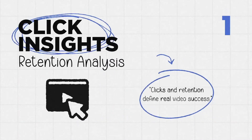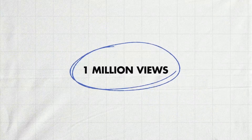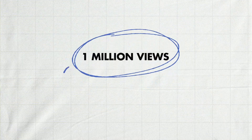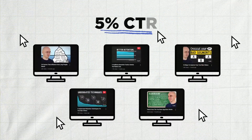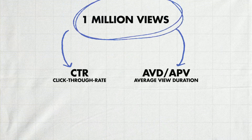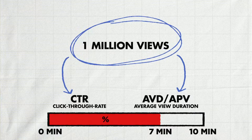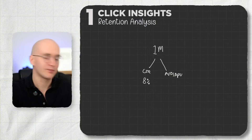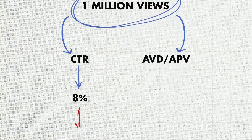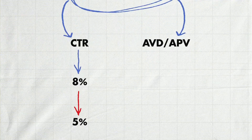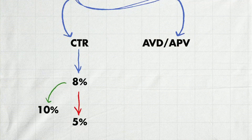One of the things that people always do is whenever they have a video with, say, 1 million views, they look at metrics such as CTR — your click-through rate, how likely people are to click on your thumbnail — and then AVD or APV, which is the retention percentage. The problem is people say: hey, I want 8% CTR, and if it's lower like 5% I'll stop, or if it's higher like 10% I'll make more videos like that.